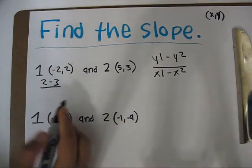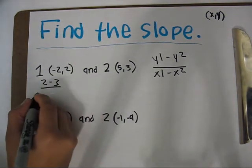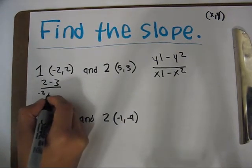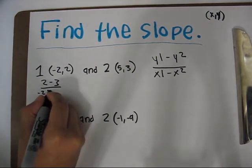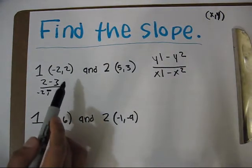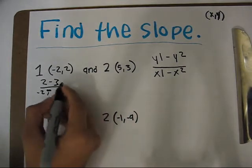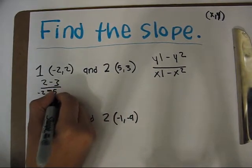Minus 3. Divide that by x1 which is negative 2, subtract by x2 which is 5.